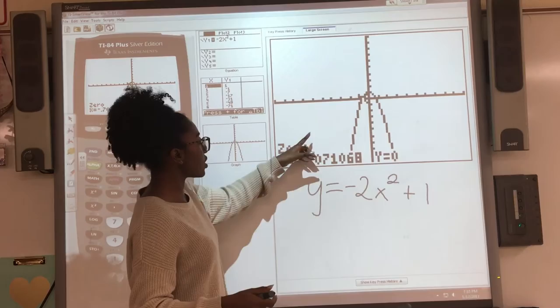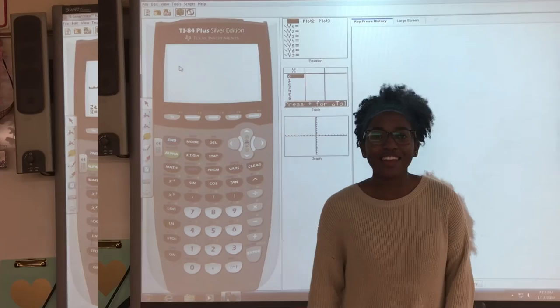For quadratics, we know that you are given two solutions most of the time. This is your one solution. To find the other solution, you do the same thing but on the other side.